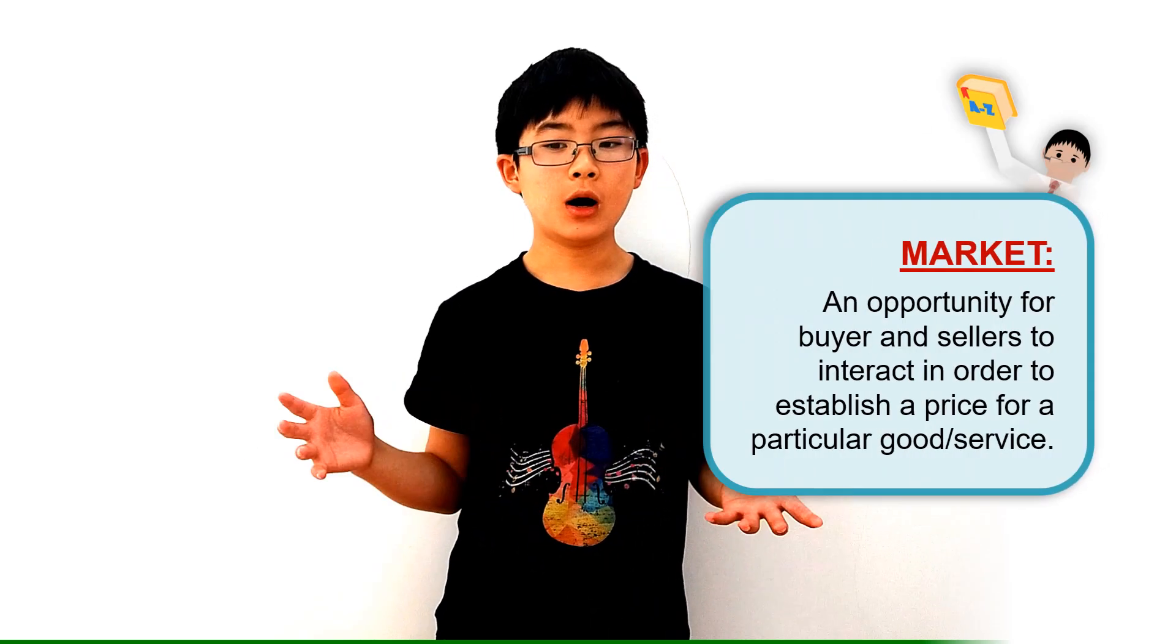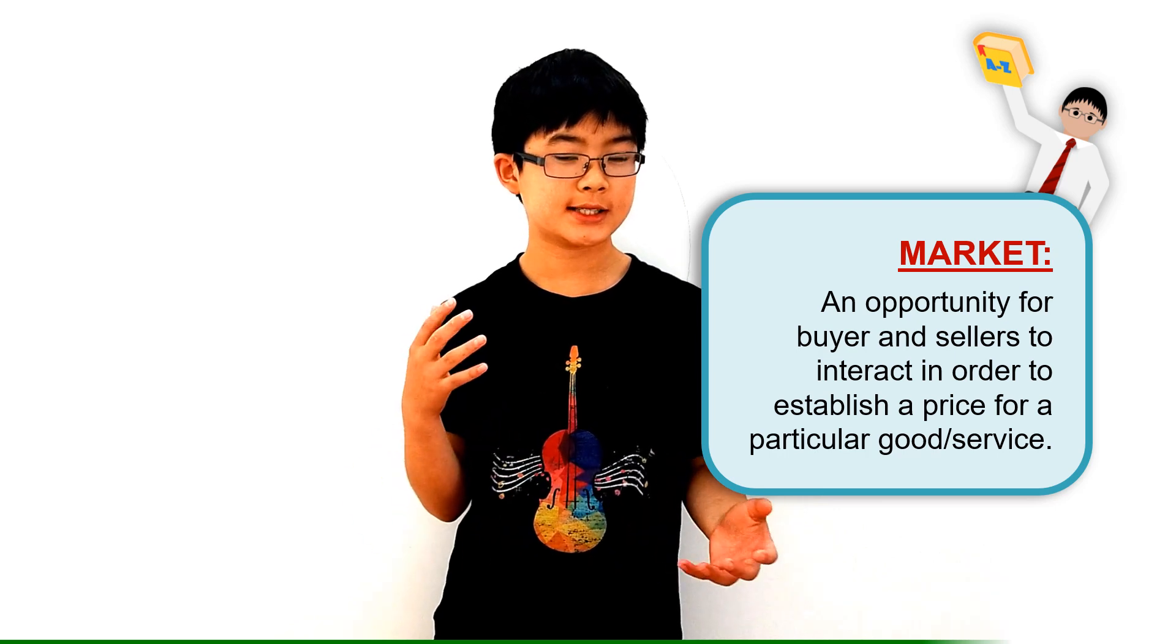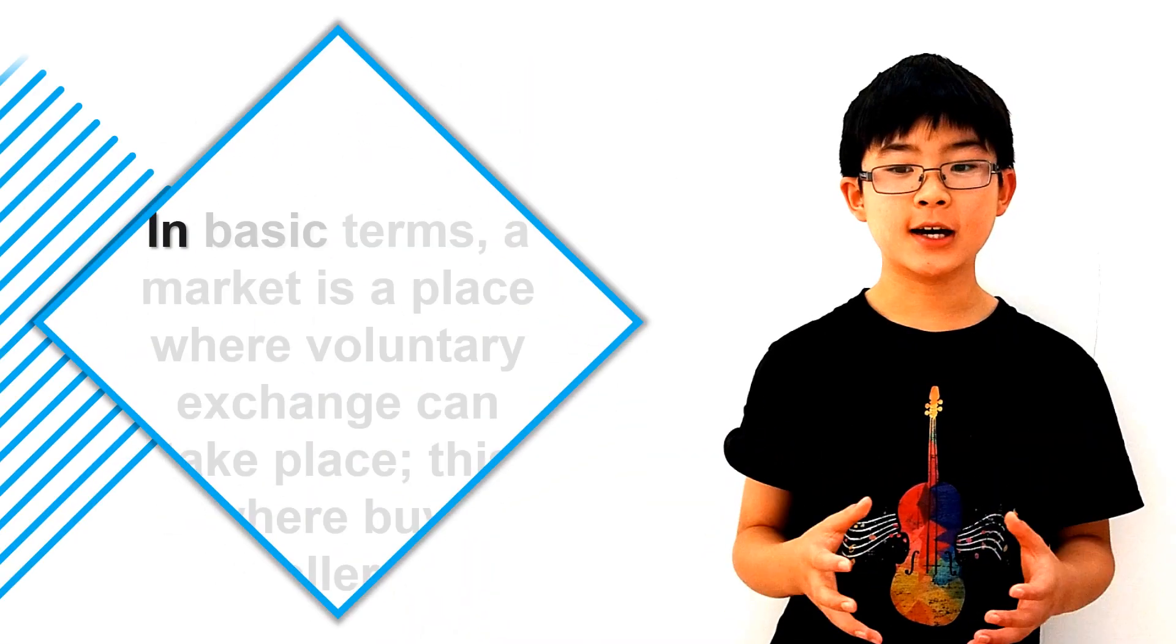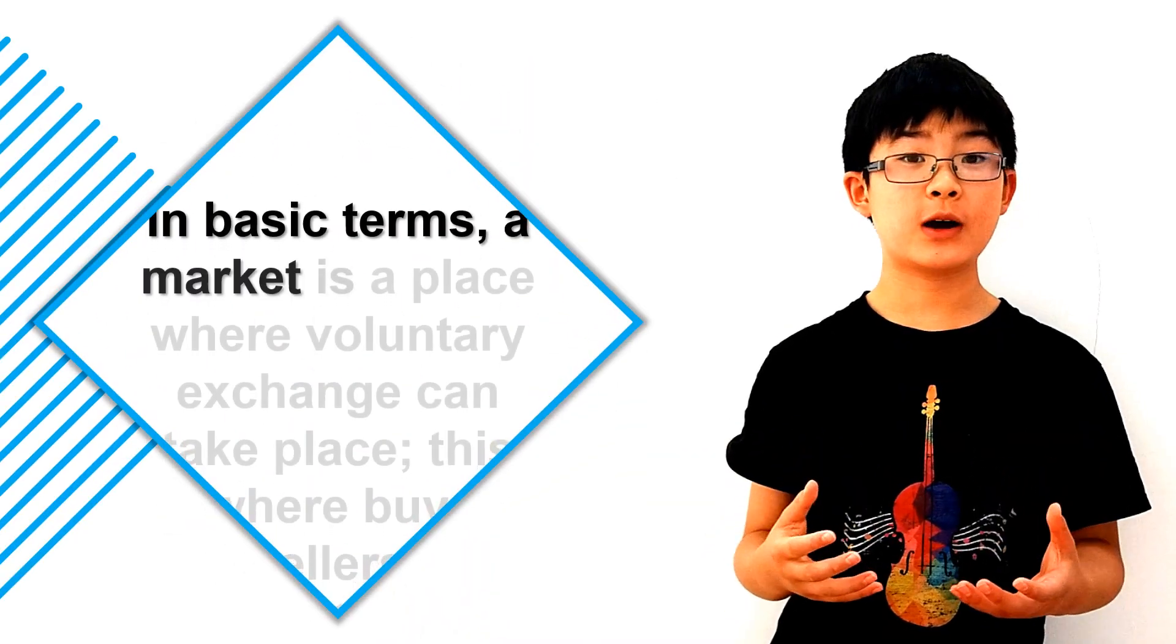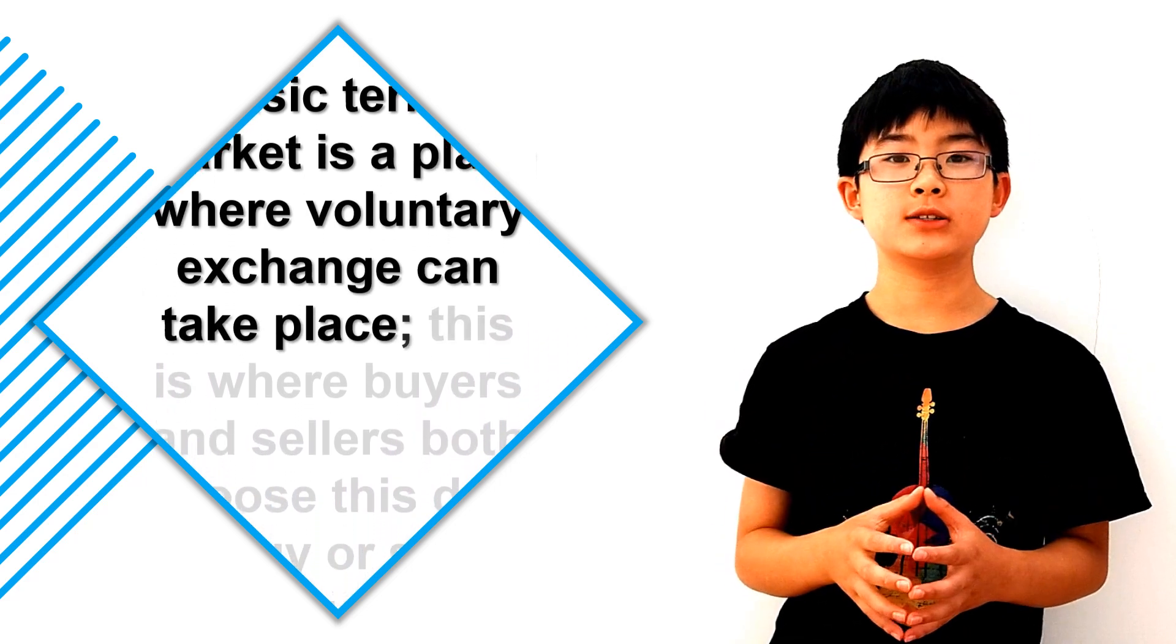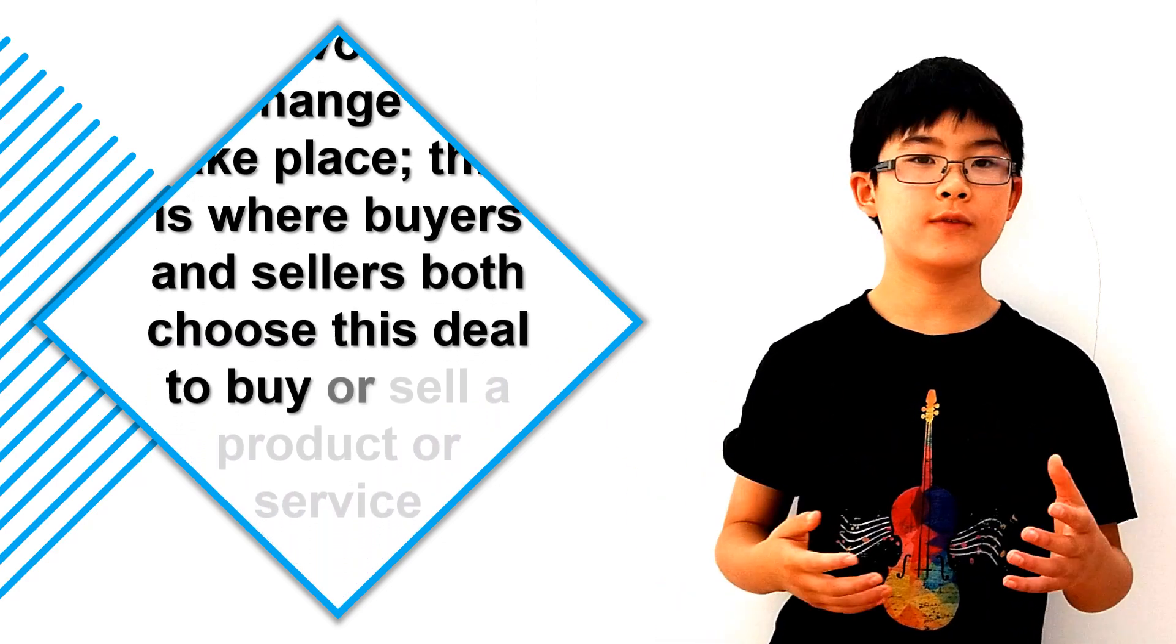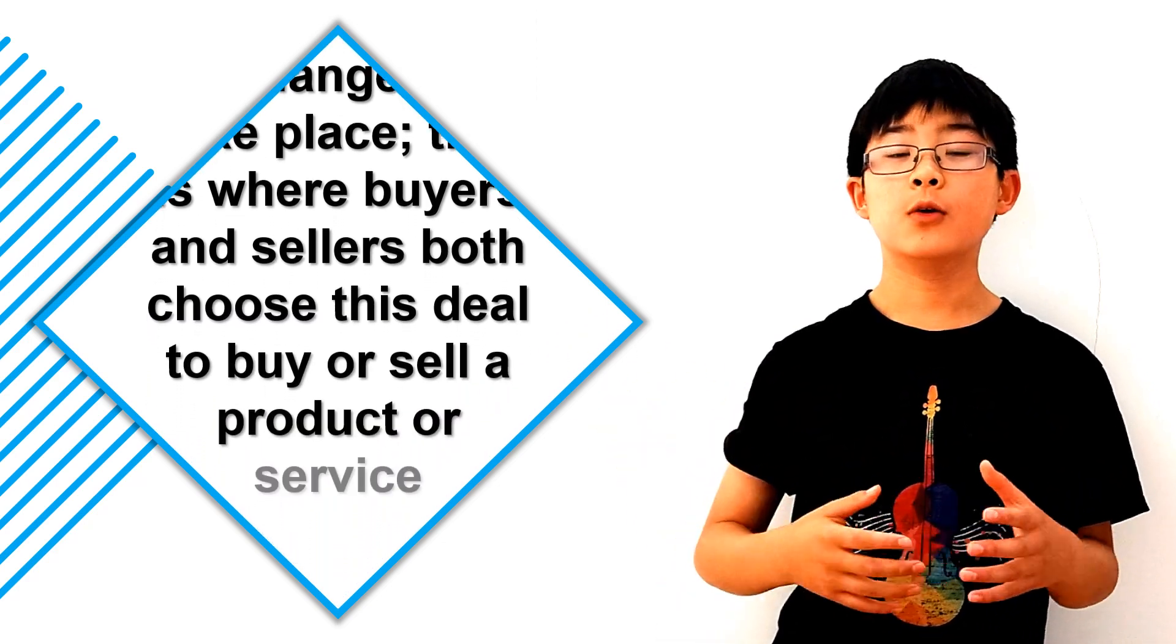So a market is an opportunity for buyers and sellers to interact with each other to establish a price. This might sound a bit complicated, but let's break it down. In basic terms, a market is a place where voluntary exchange can take place. And that's exactly what it sounds like. Where buyers and sellers both choose this deal of a price to buy or sell a product or service.